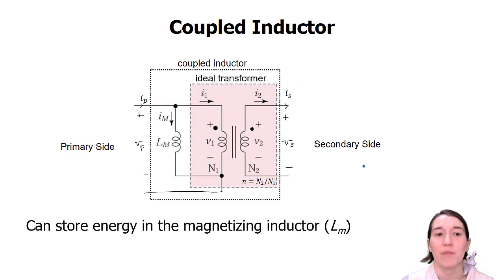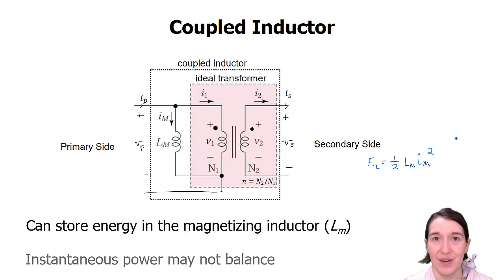And it's important because a coupled inductor can store energy in the magnetizing inductor. And the amount of energy stored is just as in an inductor, so it is one half Li squared. So as long as current is going through the magnetizing inductance of the inductor, there's energy in it.